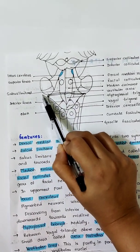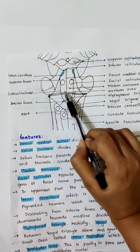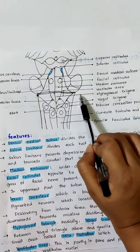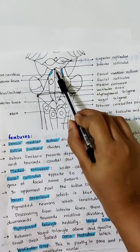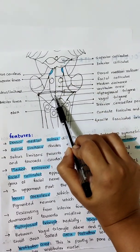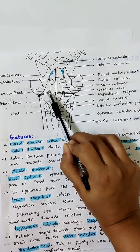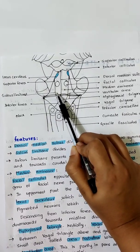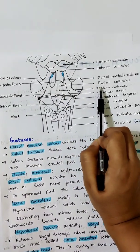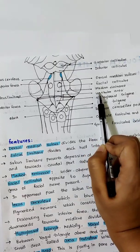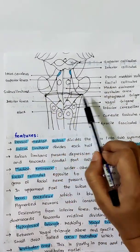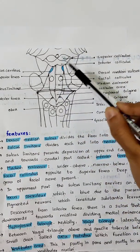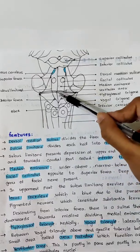The sulcus limitans divides each symmetrical half into the median eminence and the vestibular area. The median eminence is wider above in its upper part and narrow below.